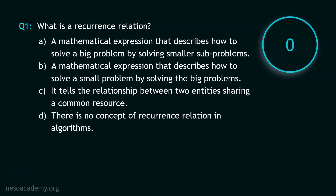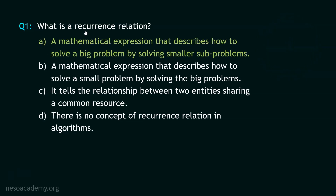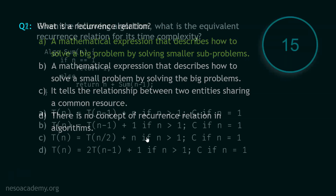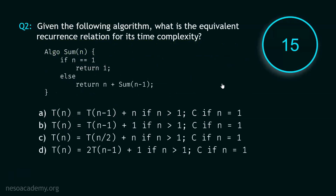Stop. The correct option is option A. A recurrence relation is a mathematical expression that describes how to solve a big problem by solving smaller sub-problems. That is the true statement. Now let's move to question number 2, and your time starts now.